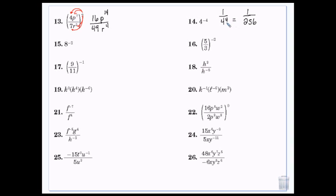If it's small enough for you to do, go ahead and simplify it, but if it's like 4 to the 15th, no. But if it's like 4 or less — 4, 3, or 2 — go ahead and do it. So I have negative 2, so I throw it in the basement and that becomes 1 over 64.